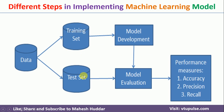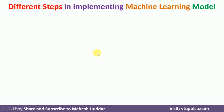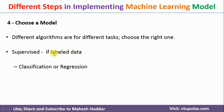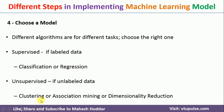Once you divide your data into training and testing parts, the next step is to choose a model and build it. Based on the kind of data, you select a particular model. If the data is labeled, you use supervised machine learning algorithms. Within supervised learning, if the labeled data is discrete you use a classification algorithm; if it is continuous or real-valued you use a regression algorithm. If the data is unlabeled, you use clustering, association, or dimensionality reduction algorithms.